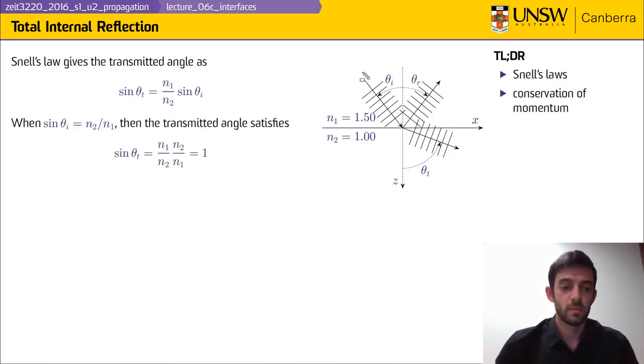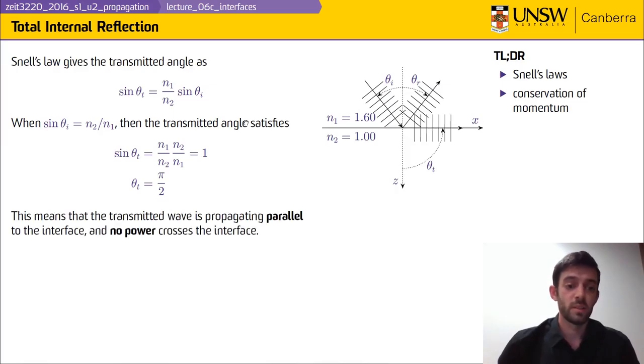As we look further at what the natural limit for sin θ_t could be—that of being one—we can then become interested with the case that θ_t = π/2. For this particularly designed scenario of having about a 39 degree incident angle and n₁ = 1.6 and n₂ = 1, this produces sin θ_t = 1. In this scenario, the transmitted wave that we see here is propagating parallel to the interface and no power crosses the interface.